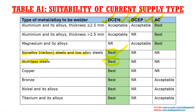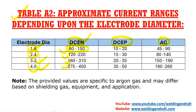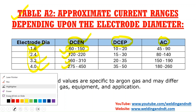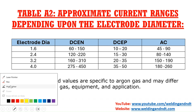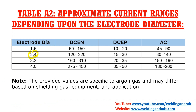For stainless steel with electrode diameter 2.4 mm, the best current setting will be 120 to 220 amps using DCEN. For 4.0 mm electrode diameter, the best current setting will be 275 to 450 amps.